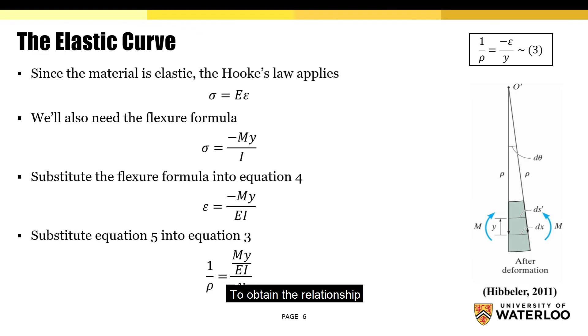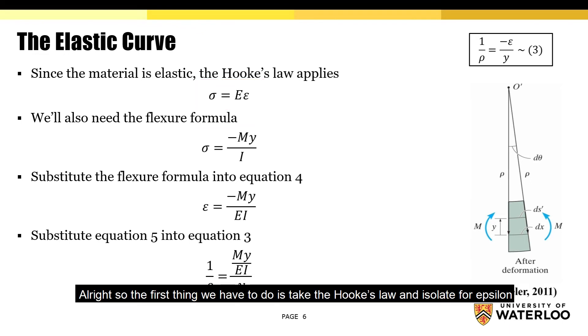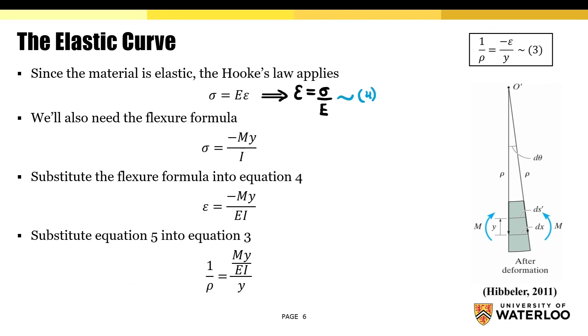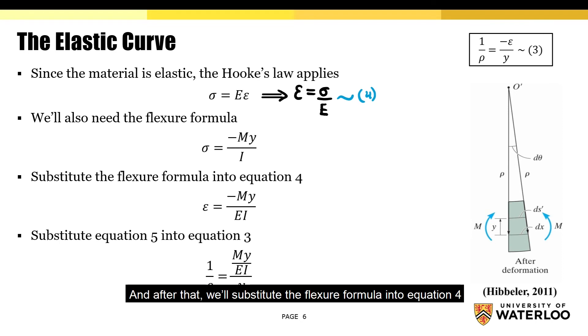To obtain the relationship, we'll have to use these two equations. Alright, so the first thing we have to do is take Hooke's Law and isolate for ε. We'll call this equation 4. And after that, we'll substitute the flexure formula into equation 4. We'll call the resulting equation equation 5.